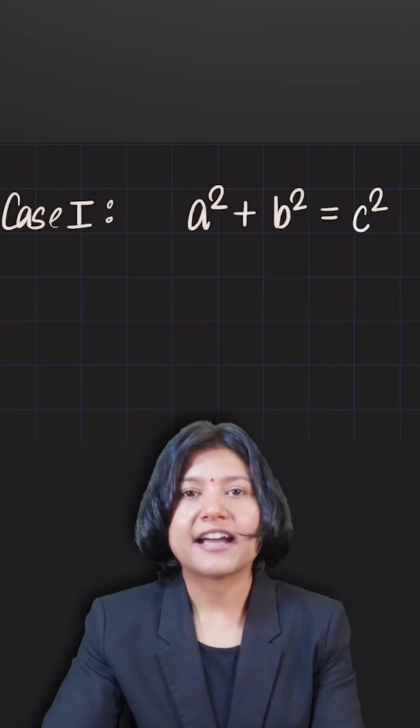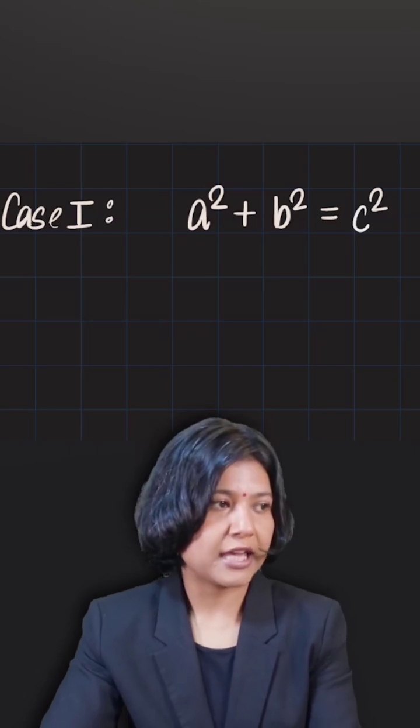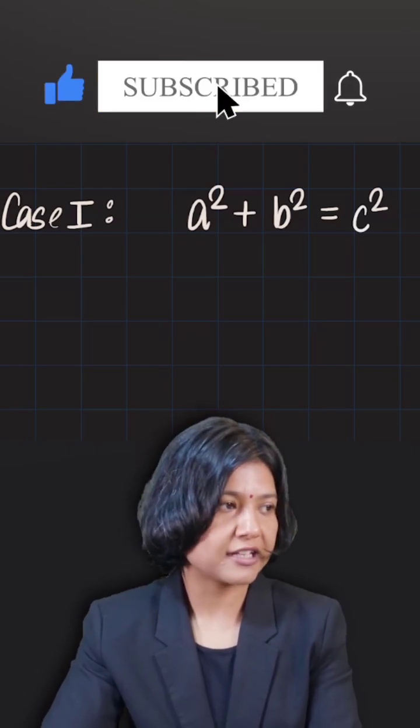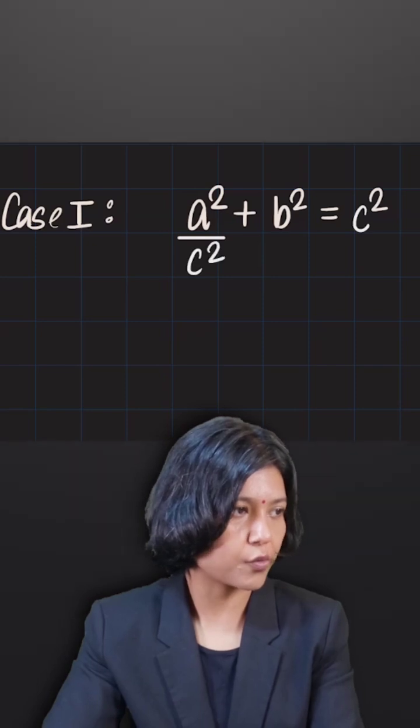Let's take the first case. I want to divide all of them by one variable. We have three variables a, b, c, so I'm dividing by c squared.